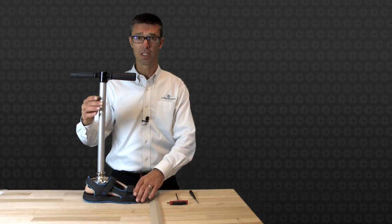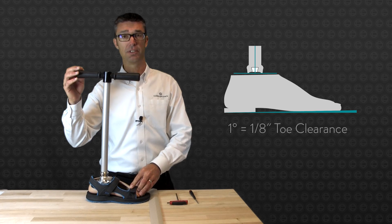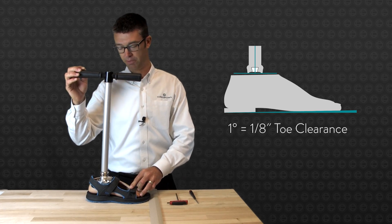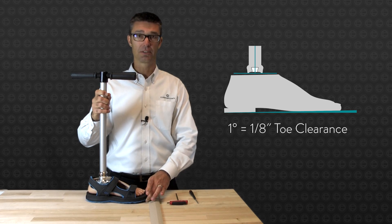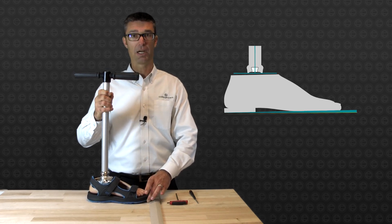In standard bench alignment on the Odyssey K2, we have one degree of dorsiflexion hydraulic range available to us. This will translate to approximately an eighth of an inch of toe clearance in mid stance with the pylon and vertical.